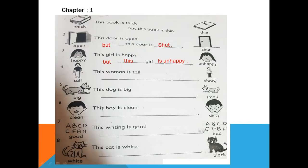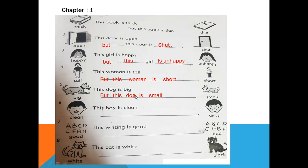Fourth one: look at this woman — she is tall. Now look at this picture — she is short. Tall and short are two different adjectives. 'This woman is tall but this woman is short.' Look at the picture — tall and short. Fifth one: look at picture number five — big and small, again two different adjectives. This dog is big but this dog is small. 'This dog is big but this dog is small.'